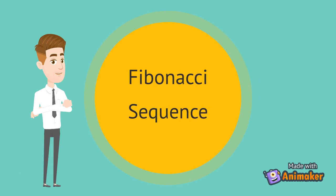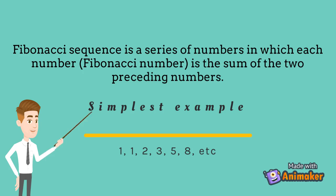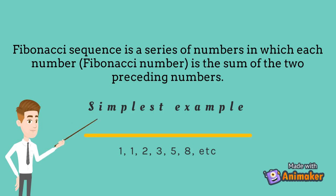Now, we will talk about Fibonacci Sequence. Fibonacci Sequence is a series of numbers in which each number is the sum of the two preceding numbers. For example: 1, 1, 2, 3, 5, 8. We can see that the first term added to the second term becomes the third term — 1 plus 1 equals to 2. The second term added to the third term becomes the fourth term — 1 plus 2 equals to 3, and so on.